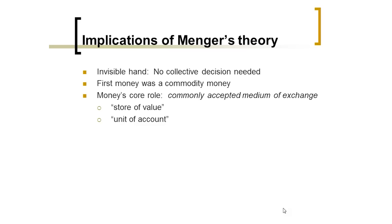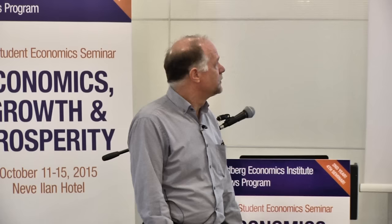Here's the implication of Menger's theory: you don't need a top-down story of how money emerged. You don't need some genius or wise king, no collective decision, no Chamber of Commerce voting on what to use as money. In this kind of story, the first money has to be something useful — something people do want to consume. It has to be a commodity. This is a story that gives rise to commodity money, and we're going to have to extend it to explain how the world moved from a commodity money system, which we had until the last century, into the system today where money is completely divorced from any commodity.